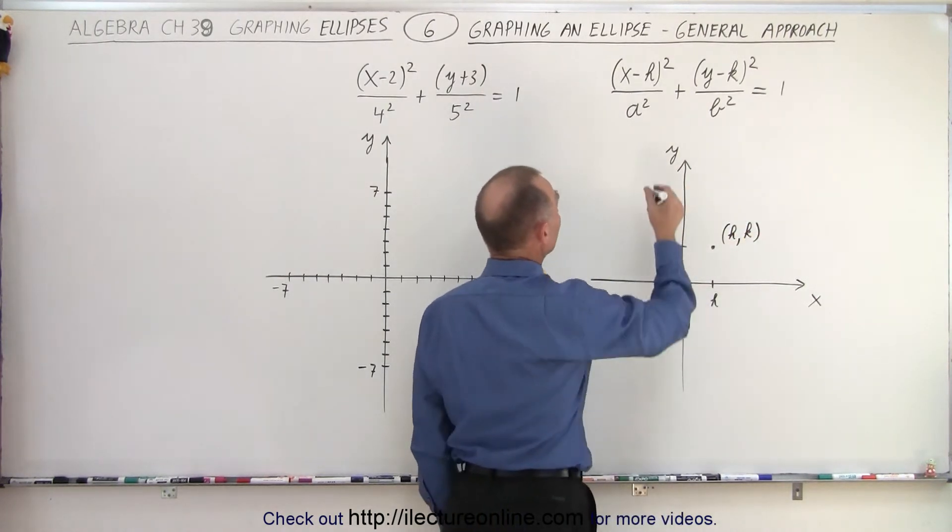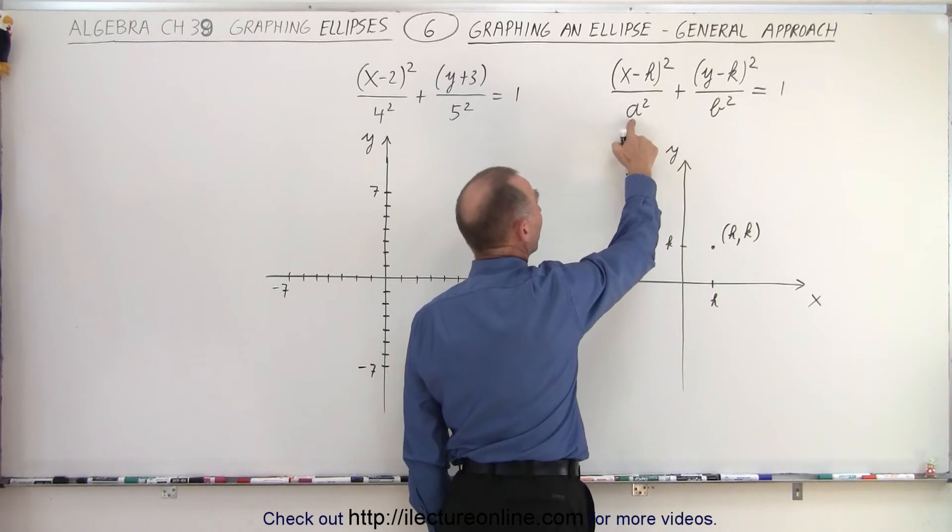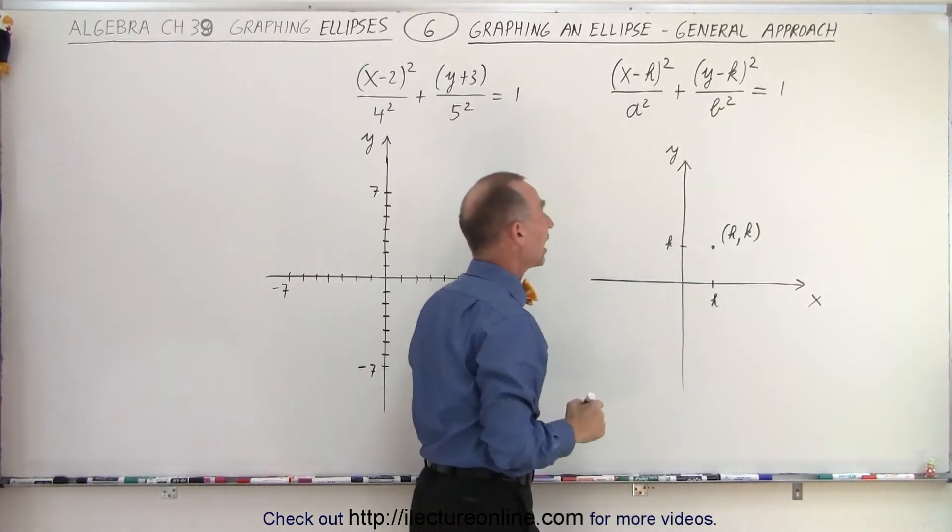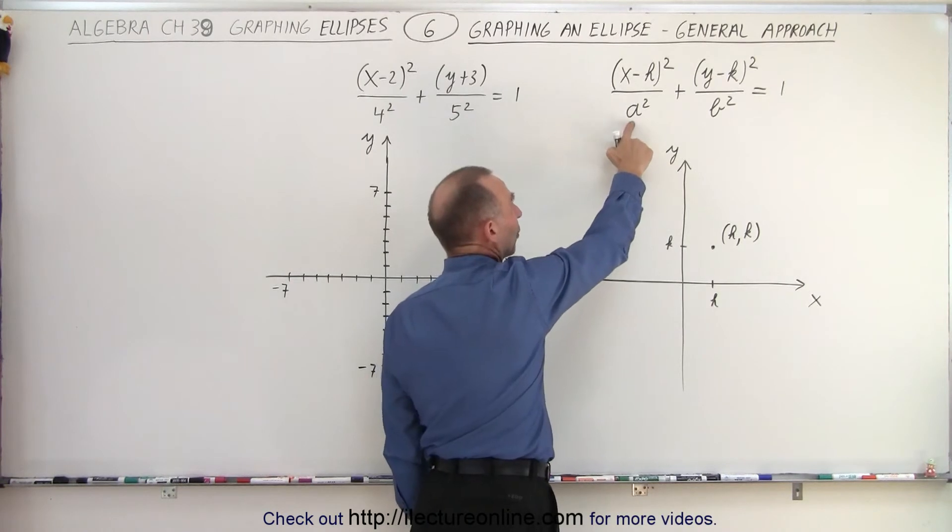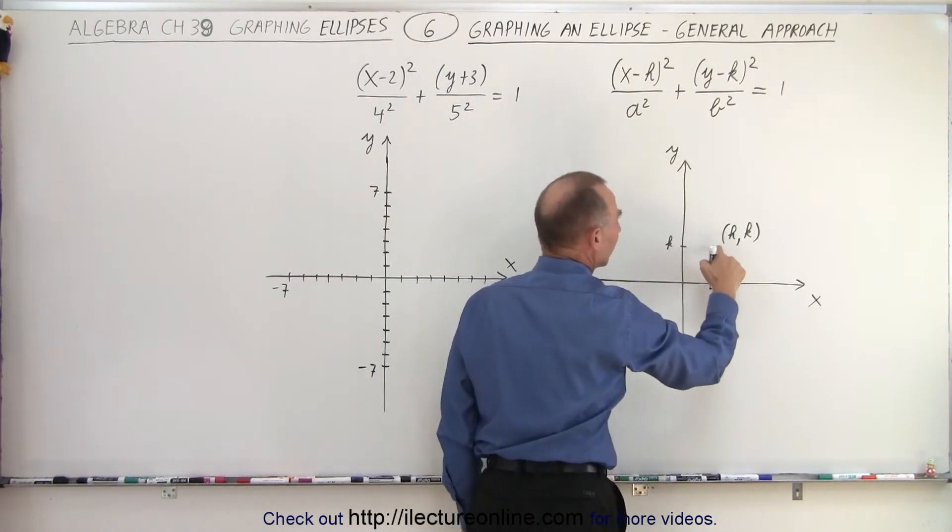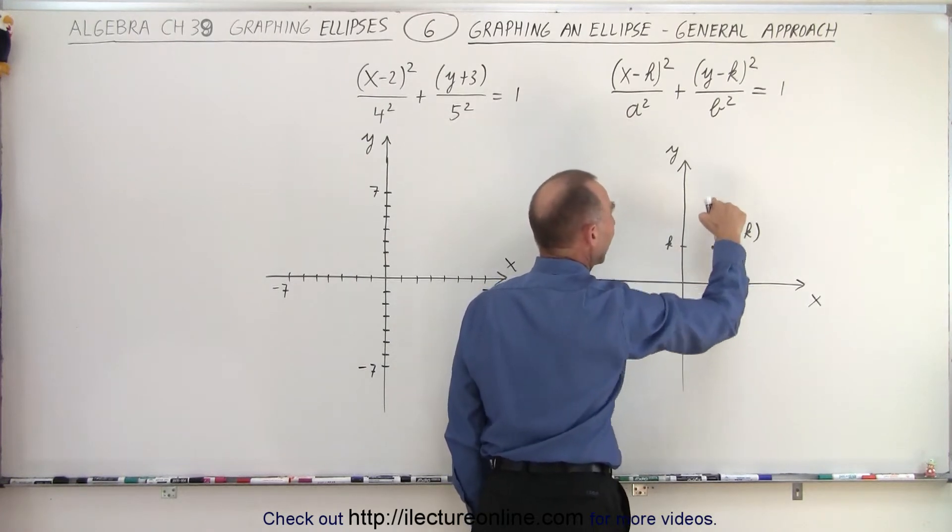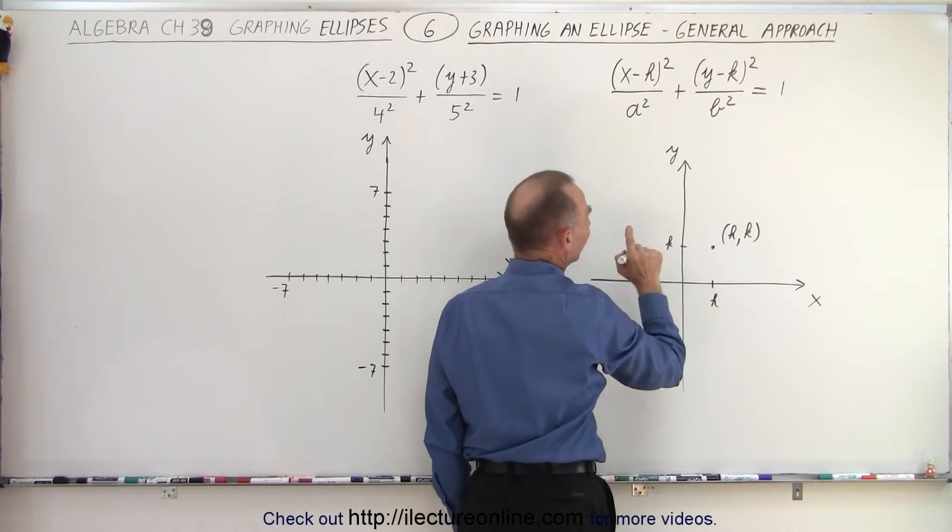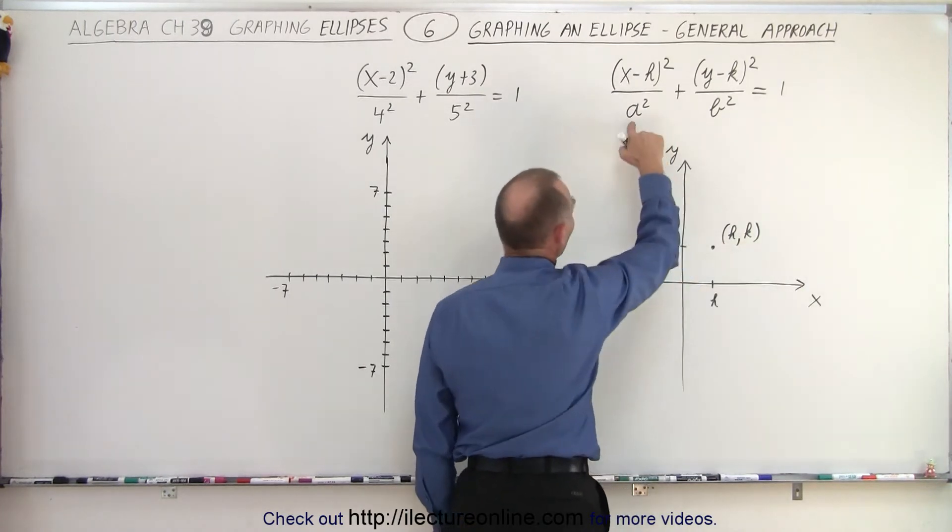Next, what we need to do is we need to look at the number underneath the x minus h, and the number underneath the y minus k. In this case, we start from the center point where h and k is, and we move up and down, oh, not up and down. This belongs to the x. So in this case, we move to the right and to the left at distance a.